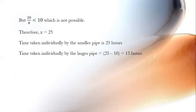Now, 30 by 8 is less than 10. We are told the larger pipe takes 10 hours less than the smaller pipe. If x itself is less than 10, then x minus 10 would be negative, which is not possible. Therefore x equals 25. The time taken individually by the smaller pipe is 25 hours, and the time taken individually by the larger pipe is 25 minus 10, which is 15 hours.